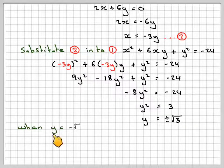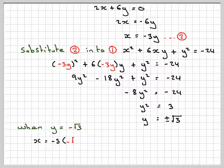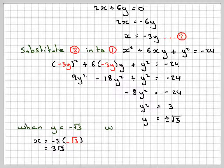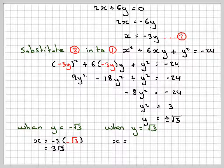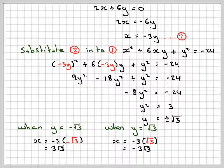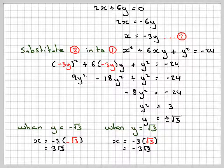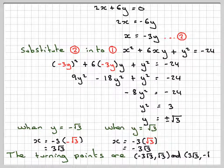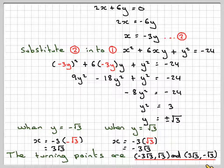When y is equal to minus root 3, x, substituting into this, will be 3 times minus root 3, minus times minus is positive. So we get 3 root 3, and when y is equal to root 3, we get x is equal to minus 3 times root 3, which gives me minus 3 root 3. So the turning points are minus 3 root 3, root 3, and 3 root 3, minus root 3.